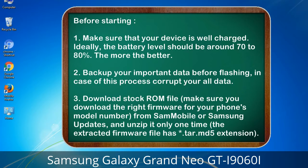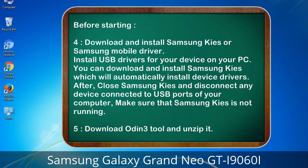3. Download the stock ROM file. Make sure you download the right firmware for your phone's model number. Download it from Sammobile or Samsung Updates, and unzip it only one time. The extracted firmware file will have a *.tar.md5 extension. 4. Download and install Samsung Kies or Samsung mobile driver, and install USB drivers for your device on your PC. Samsung Kies will automatically install device drivers.